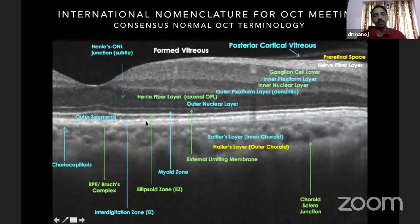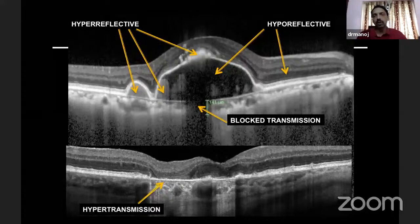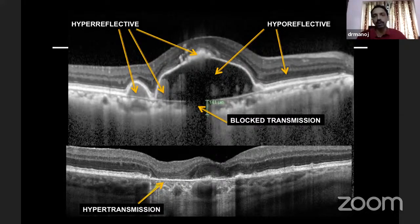Below that, you have the retinal pigment epithelium and the Bruch's complex. We define lesions on the OCT as either hyperreflective or hyporeflective. This is an example — something more white in color is called hyperreflective. These are all examples of hyperreflective lesions.